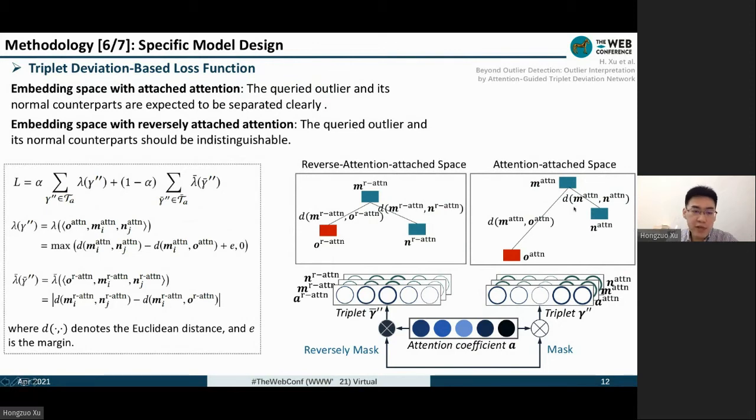Therefore, the first loss term is minimized to push the distance between two normal data m and n to be smaller, and the distance between the query outlier and normal data m to be larger than d_mn plus epsilon. Epsilon is a margin, which means the attention-guided embedding space is optimized to make the query outlier isolated from the normal data.